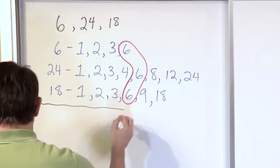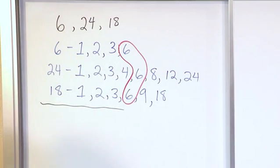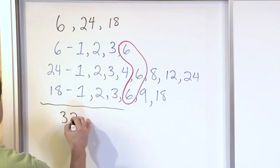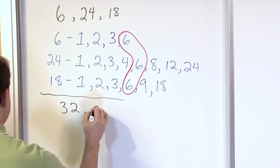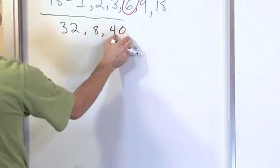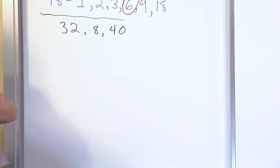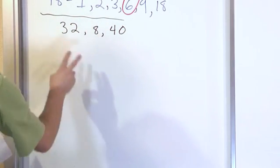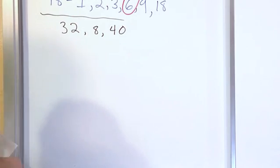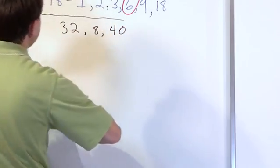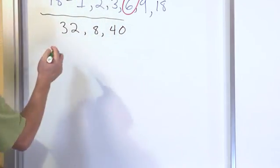So let's do another one. Let's say we're going to find the greatest common factor between the numbers 32, 8, and 40. Of course, the larger the numbers you have, the more factors you're going to have because the more things can be multiplied together to give you that number. So let's switch colors here and get started.